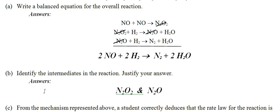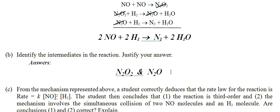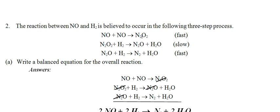Part B says to identify the intermediates. Intermediates are things that are produced and later appear as a reactant. They do not have to appear in the very next step — they can show up two or three steps later, as long as they come back on the reactant side. Justifying your answer: an intermediate is something that's produced and later returns as a reactant.